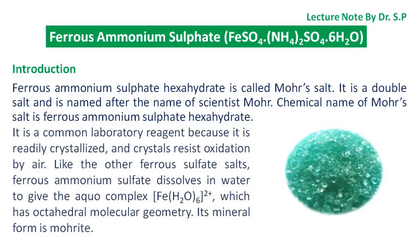In this tutorial we will discuss ferrous ammonium sulfate, or Mohr's salt. Ferrous ammonium sulfate hexahydrate is called Mohr's salt. It is a double salt and is named after the scientist Mohr. The chemical name of Mohr's salt is ferrous ammonium sulfate hexahydrate.